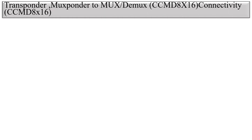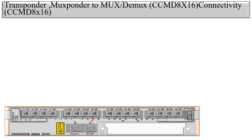Let's see the CCMD8x16 physical view. Physically the CCMD8x16 looks like this — you can see port number 1 to port number 32. These are the channel ports, also called add-drop ports. Port number 1 is the input and port number 2 is the output. The odd-numbered ports are inputs and the even-numbered ports are outputs. So channel number 1 corresponds to port 1 (input) and port 2 (output), and you can connect up to 16 channels this way.